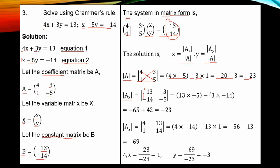For the determinant of A sub S, this is the S column. You replace that column with the constant matrix — 13 and minus 14. You find the determinant: 13 times minus 5 minus 3 times minus 14. That gives minus 65 plus 42, which equals minus 23.